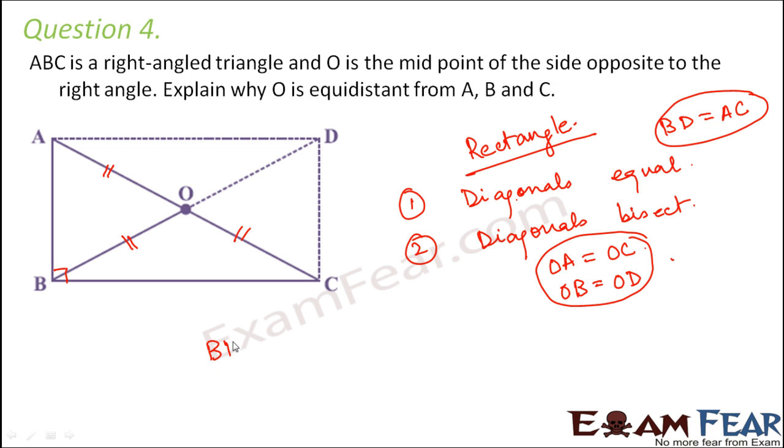That is because when we say BD is equal to AC, what are we actually saying? We are trying to say that BD is equal to AC. So BD is nothing but BO plus OD, and AC is nothing but AO plus OC.